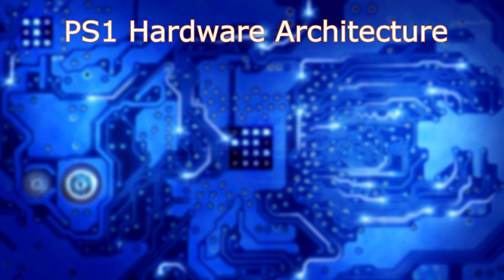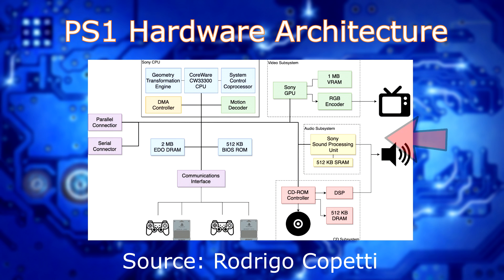The sound processing unit, or the 24-channel PCM, allowed for 44.1KHz CD stereo quality audio output. This was pretty amazing. Paired with the CD-ROM, you can store a lot of audio and music data and play it at great audio quality. It allowed for your typical modulation envelope, looping, and reverb effects. 512 kilobytes of SRAM were provided as the audio buffer, which is tremendous.